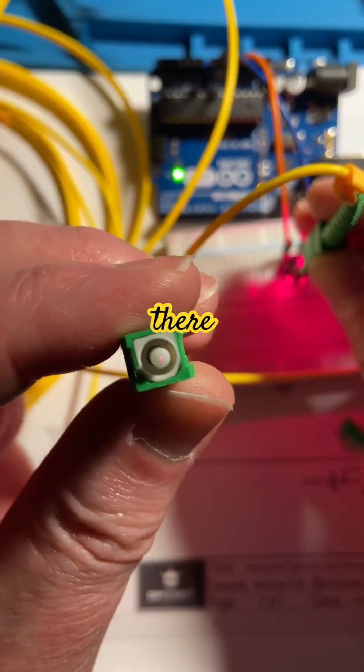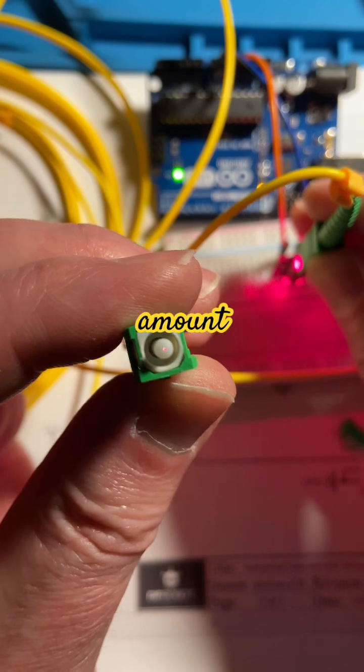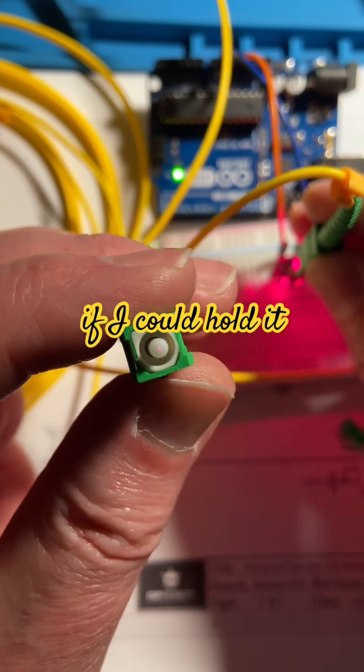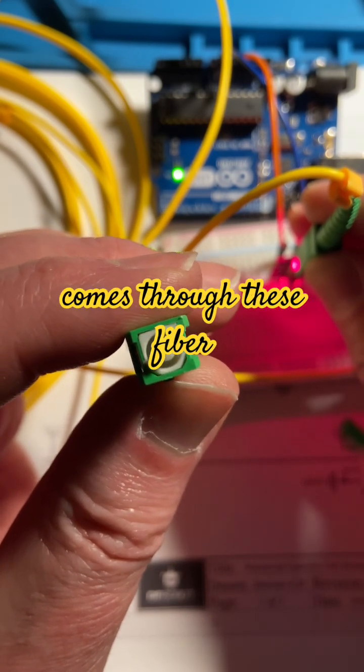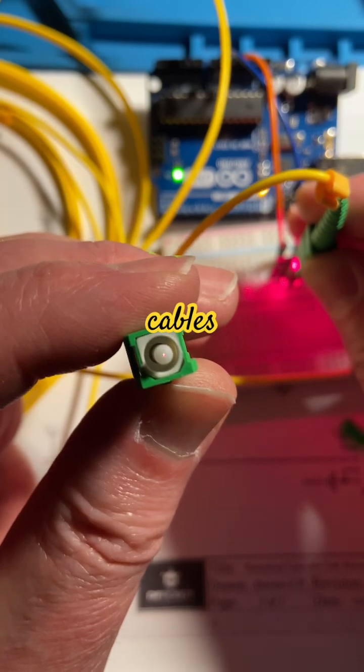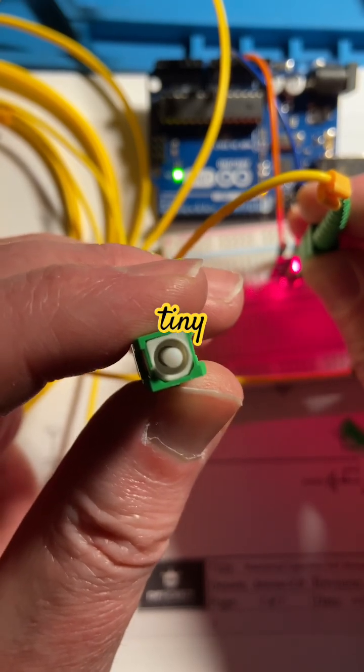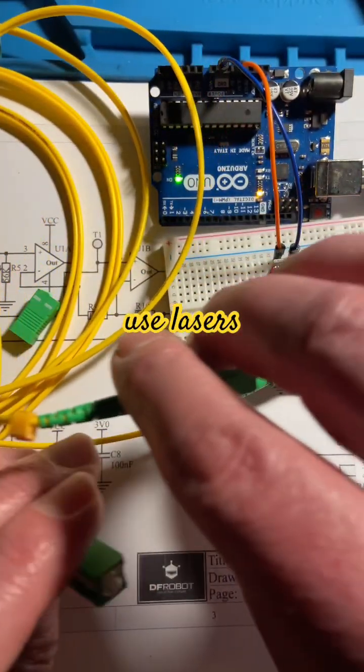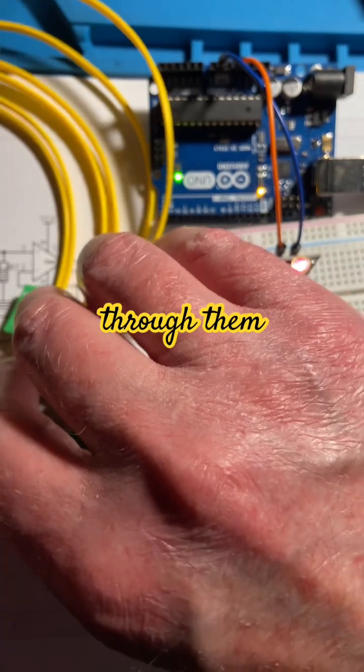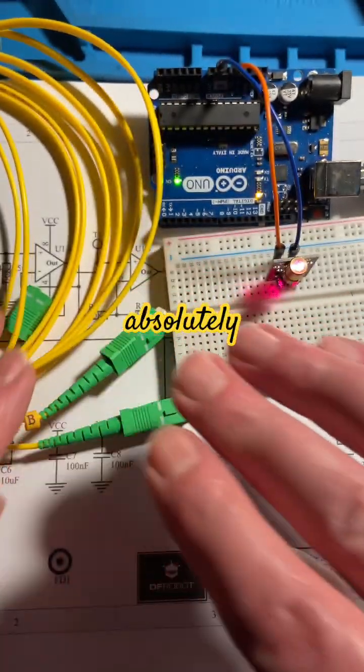Yeah, it is a tiny amount of light, if I could hold it still, that comes through these fiber optic patch cables. Tiny, tiny, tiny. So they use lasers to shine through them. Absolutely tiny.